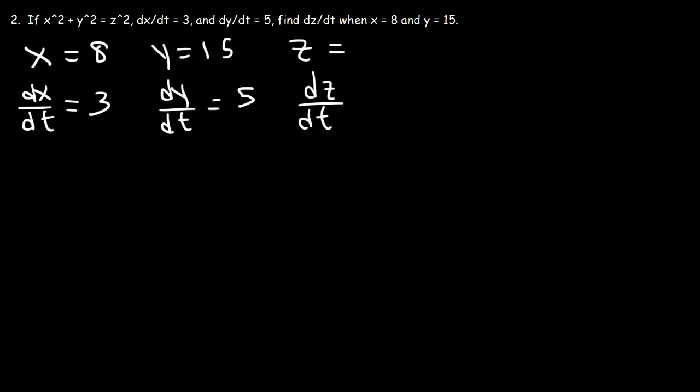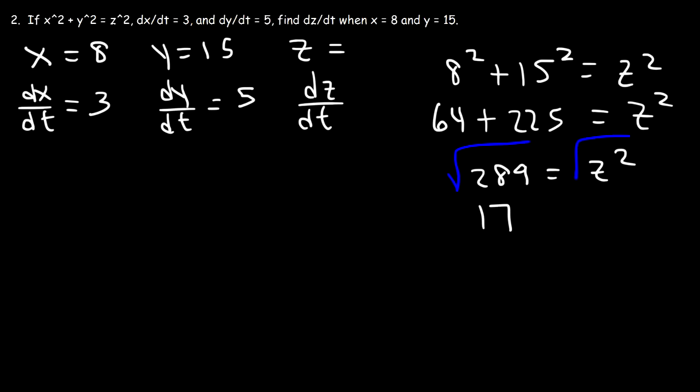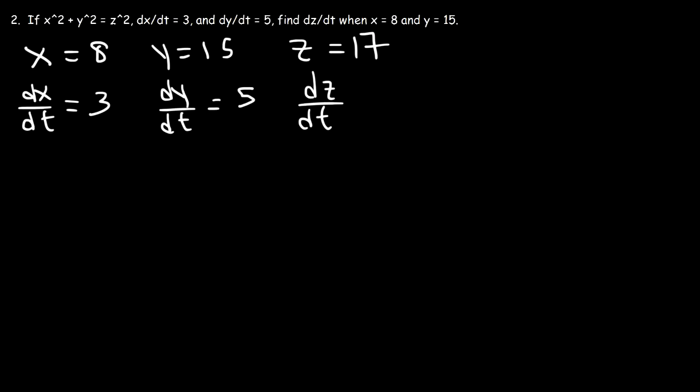So let's calculate z first. Using this formula. x squared plus y squared equals z squared. So 8 squared plus 15 squared is equal to z squared. 8 times 8 is 64. 15 times 15 is 225. And 64 plus 225, that's 289. Now, let's take the square root of both sides. So the square root of 289 is 17. So z is equal to 17. Now, just like before, z could be plus or minus 17, but we're going to choose just positive 17, just to keep things simple. Let's not worry about the negative 17 value.